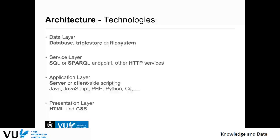For the application layer, the semantic web app should be something that runs in your browser. So you have server-side and client-side scripting, and you are very free in your choice of programming language or scripting language. You can use Java, JavaScript, PHP, Python, C-sharp, etc. There are also RDF libraries for PHP for you to use, so that is a viable option. For presenting your semantic web application to users at the client side, you use HTML and CSS to have a nice user interface.